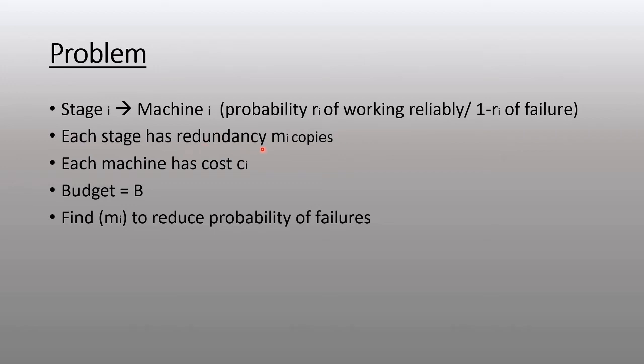Each stage can have redundant copies, and each machine at a stage costs ci. We have been given a budget B and we have to find the number of clones or copies of each stage to reduce probability of failures.